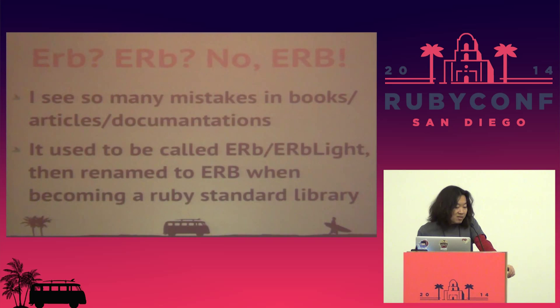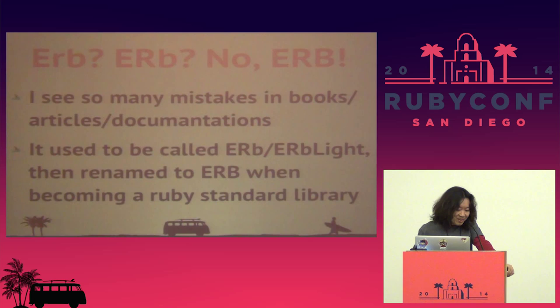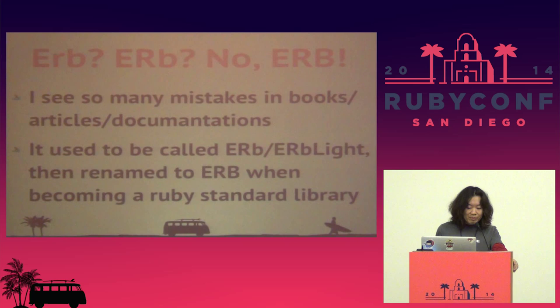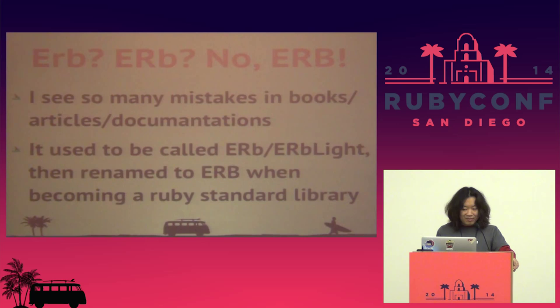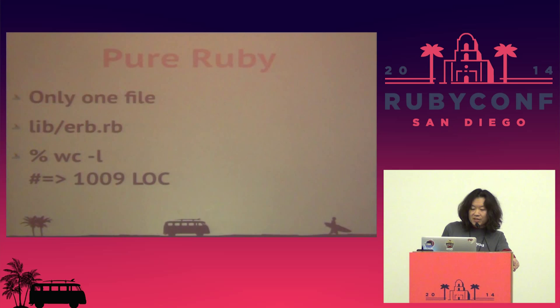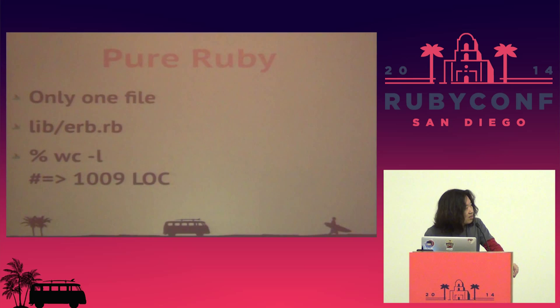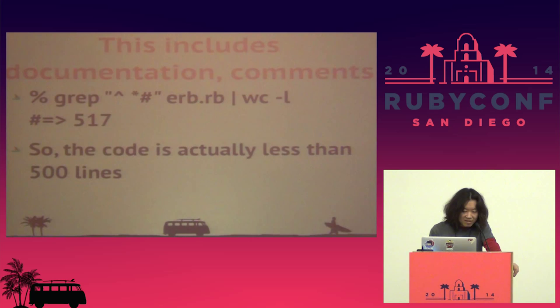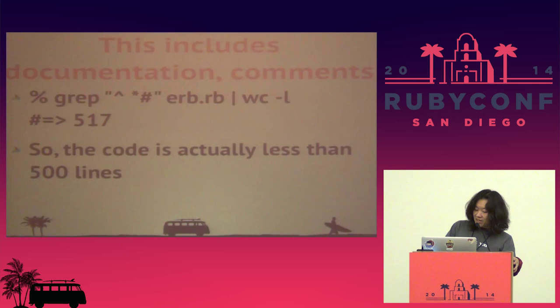When talking about ERB, I see so many misspellings in books, even in the Pickaxe book. Don't spell ERB like 'er' with a small 'b'. It used to be called that, but it was renamed to full capital ERB when it became a Ruby standard library. ERB is implemented purely in Ruby — it's actually only one file in the lib directory, with approximately 1,000 lines. But actually half of them are documents, so it's less than 500 lines. It's quite small — you can read it.